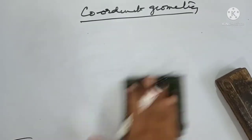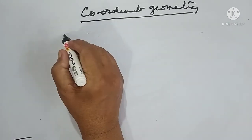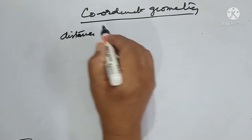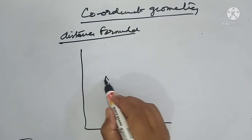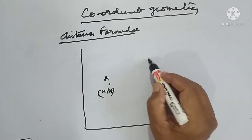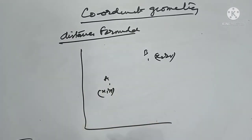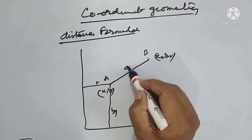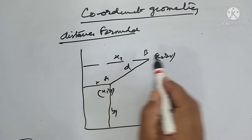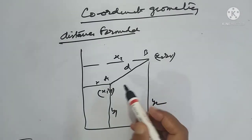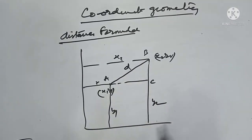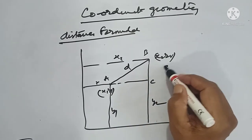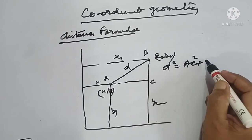Now we have to find the distance formula. Let us suppose A is a point (X1, Y1) and B is another point (X2, Y2). This is X1 distance away from here, and this is Y1 distance away from here. We are required to find the distance D. This is X2 and this is Y2. We connect this to this point, so this forms a right angle triangle. This is D, this is C. So by Pythagoras, D squared is equal to AC squared plus BC squared.